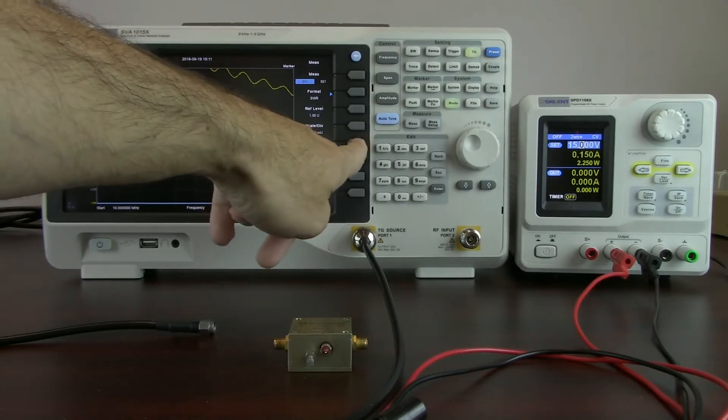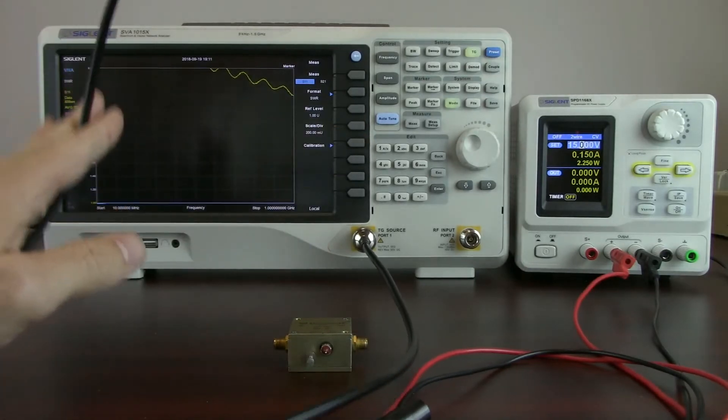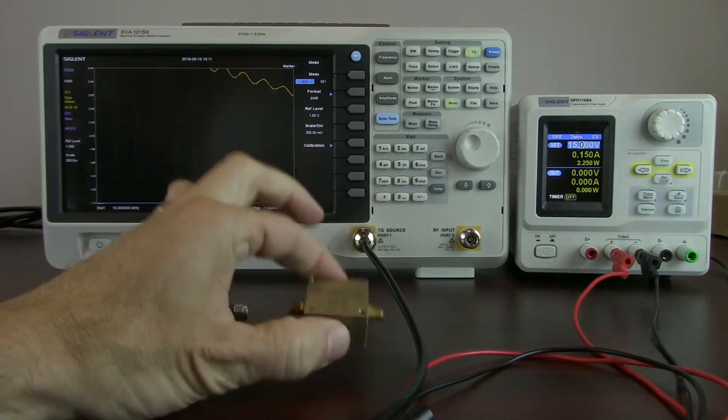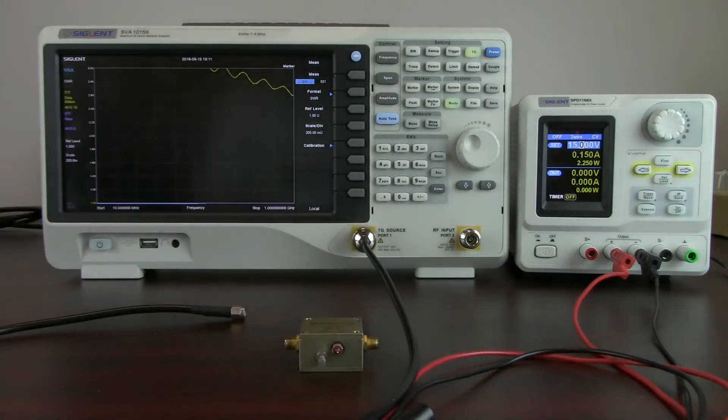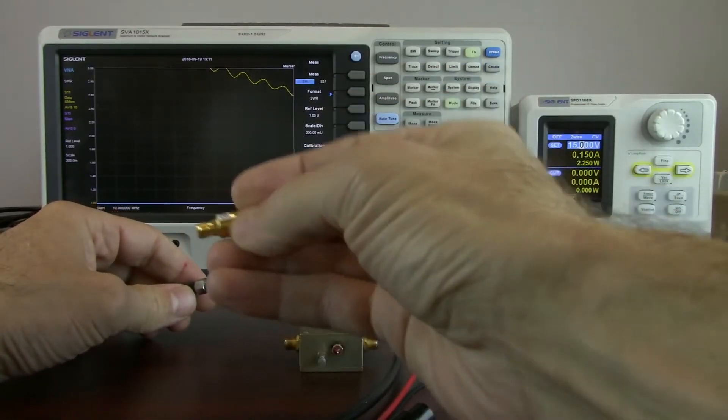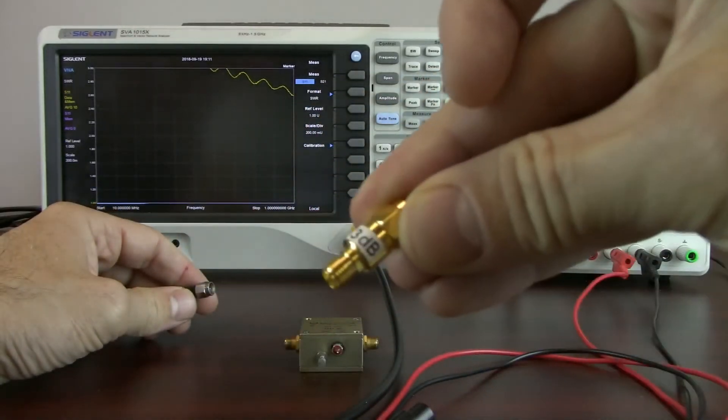And now I'm going to perform a calibration. This is going to remove the effects of the cabling, so we're only going to measure the device under test. Since this is an amplifier, and amplifiers and active devices can be sensitive to impedance differences, we're actually going to insert a 3 dB attenuator into the cabling.